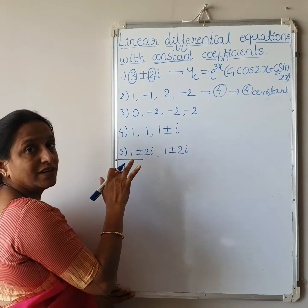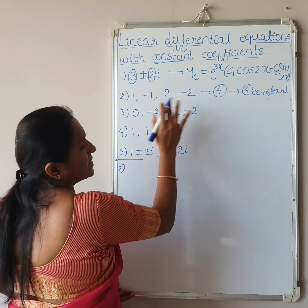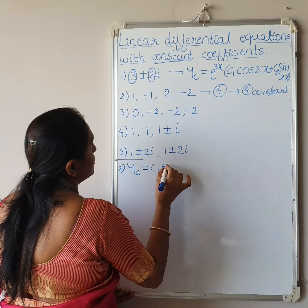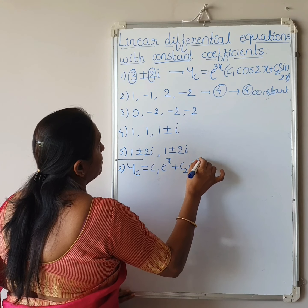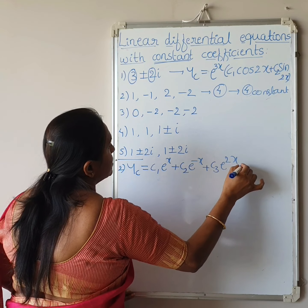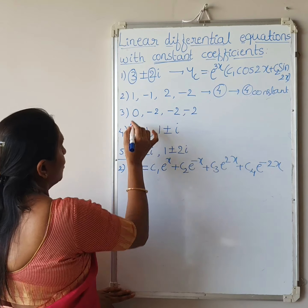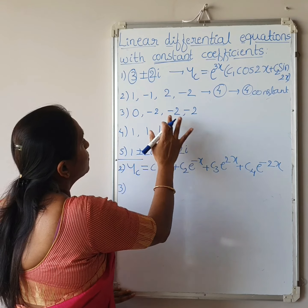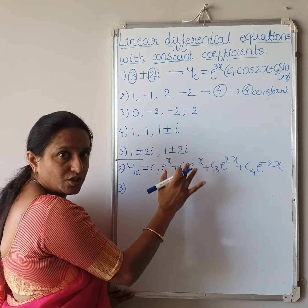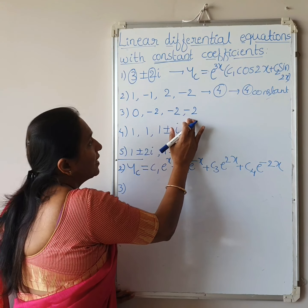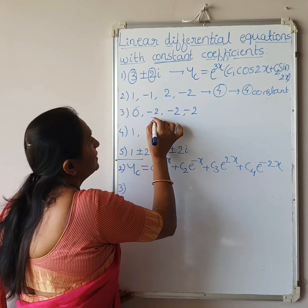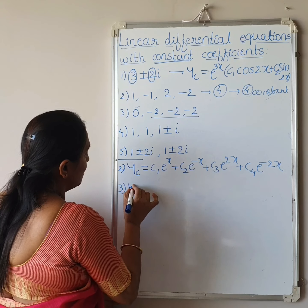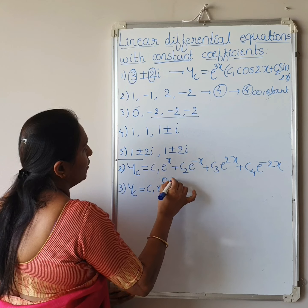For the second example, there are 4 roots, so 4 constants are needed. All roots are real and distinct, so yc equals c1·e^x plus c2·e^(-x) plus c3·e^(2x) plus c4·e^(-2x). For the third example, there are also 4 roots: one is distinct and three are equal. One root is 0 and three roots are -2.